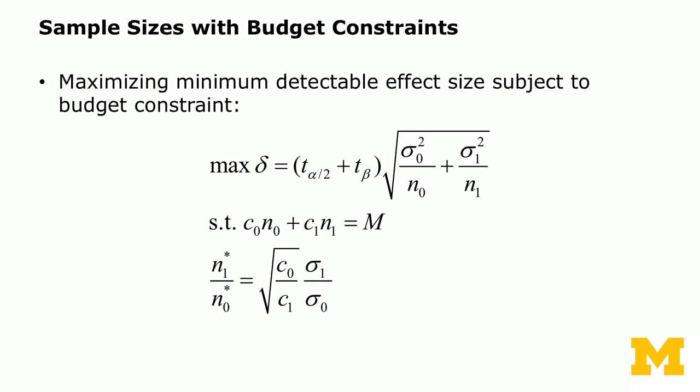The square root of C0/C1 tells us: if the treatment condition is very expensive (C1 is large), the ratio is small, and we scale back the number of treatment subjects — not proportional to marginal cost, but to the square root of marginal cost. This flexible analytical framework lets you change the objective and constraints depending on your experiment to solve for the optimal sample size.